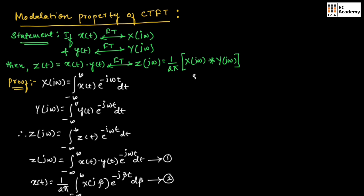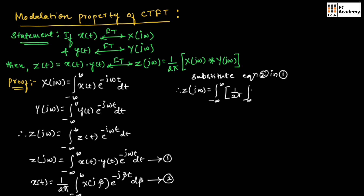Now, let us substitute equation 2 in equation 1. Therefore, we can write Z(jω) is equal to integration of minus infinity to infinity — in place of X(t), let us write 1 by 2π integration of minus infinity to infinity X(jβ) into exponential to the power of minus jβt dβ — into Y(t) into exponential to the power of minus jωt dt.